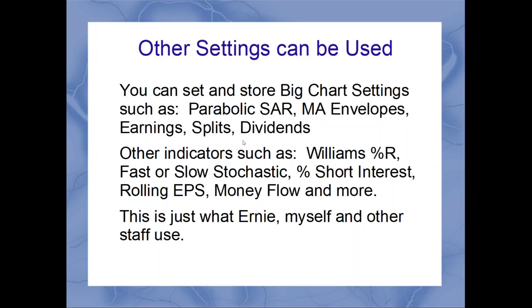We have some concerns on the chart but nothing that pushed us out of the trade yet. So what's next? Now I want to go a step further — see the company information, the news, and the profile. What does this company do? Where are they located? How many employees do they have? Just get a sense of the company size and the industry and sector they're in. If they're in a sector that's been falling over the past week, although this stock has been strong, I need to know why it's outperforming or if it's just lagging.